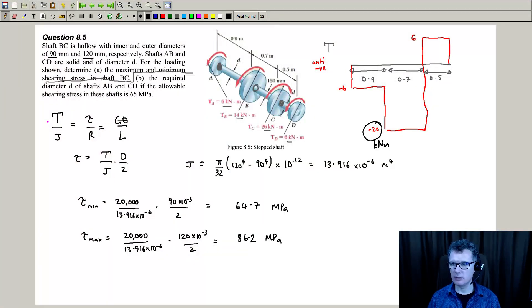OK, so part B is actually quite straightforward. You are required to find the diameter for the shafts AB and CD.